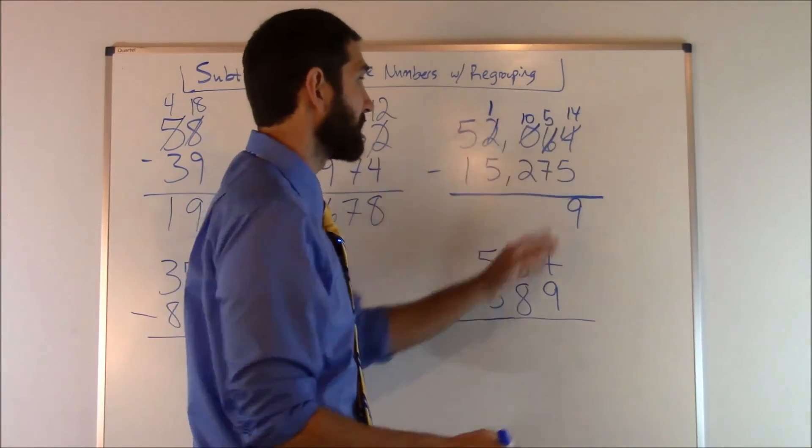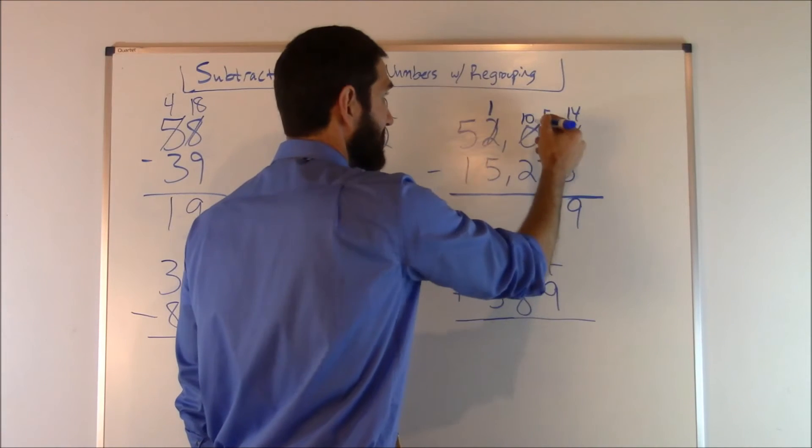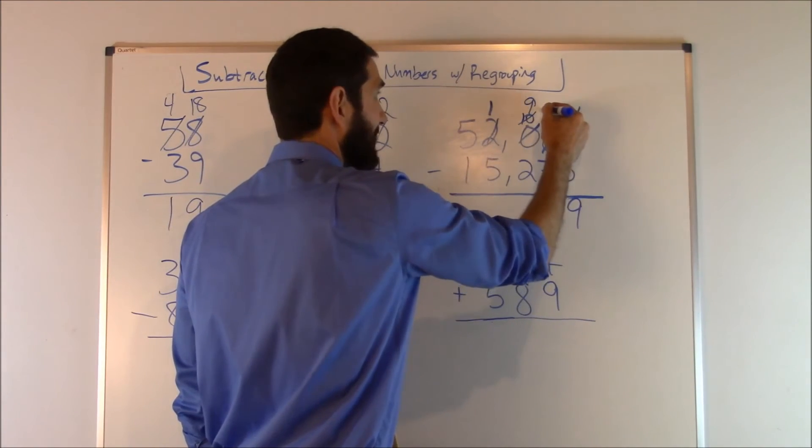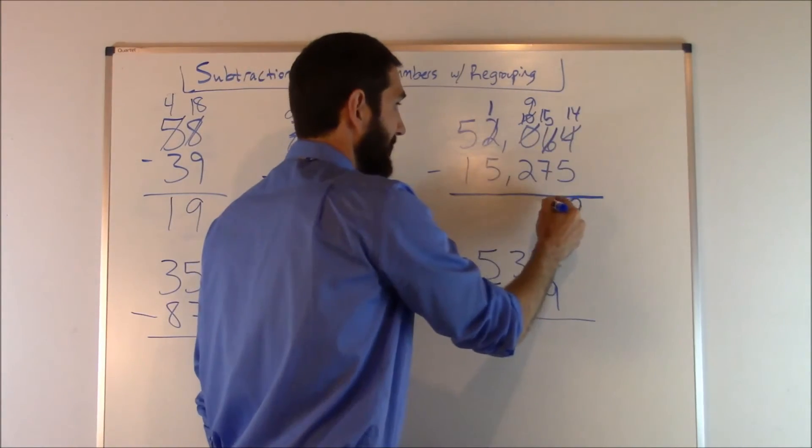Now we can go back and solve this because we need to borrow one off this ten. So we bum one off the ten. That's going to make that a nine. We come here and add ten back. That's going to make that 15. So 15 minus seven is going to be eight.